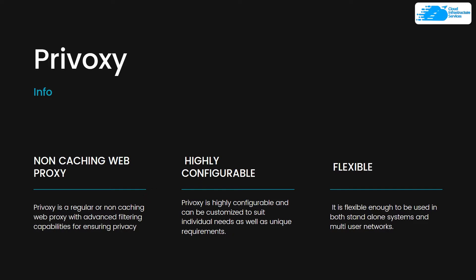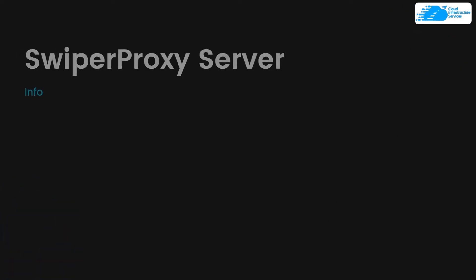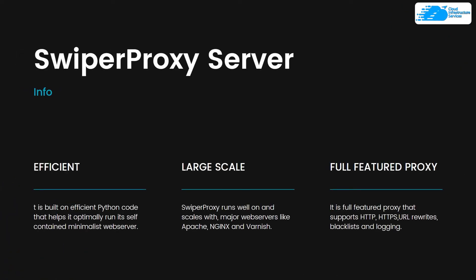Coming in at number three is Swiper proxy. With Swiper proxy you get a lot of efficiency — it is built on efficient Python code that helps it run optimally, contained in a minimalistic web server, making it quite fast. It can also be optimized to run on large-scale environments with major web servers like Apache, Nginx, and Varnish. Despite being a fast and minimalistic web server, it is a full-featured proxy supporting HTTP, HTTPS, URL rewrites, blacklisting, and logins.